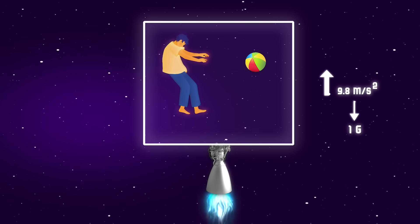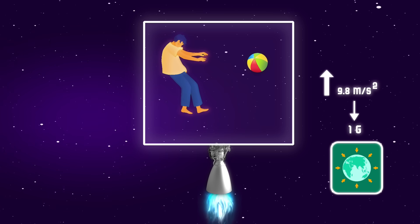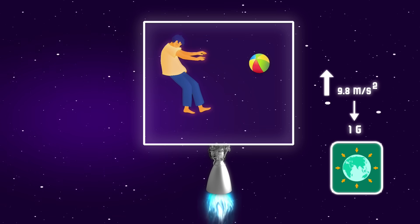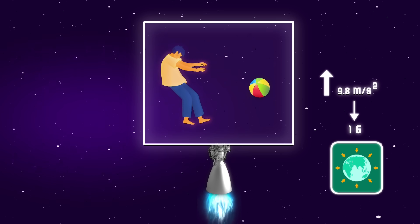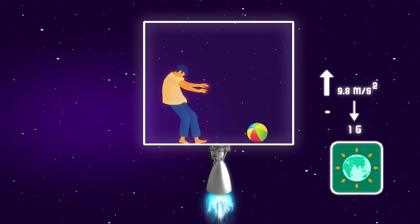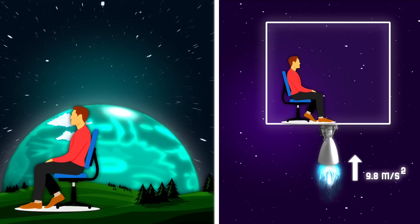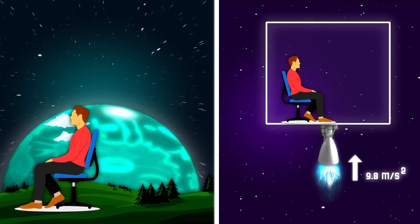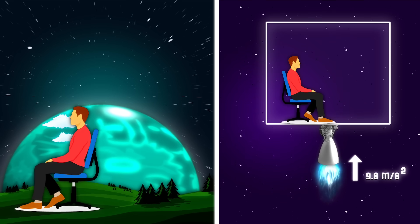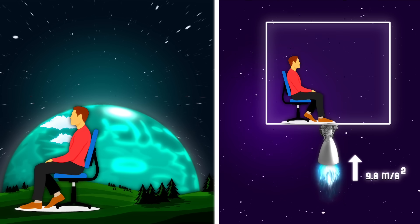9.8 is 1g, the gravitational force for Earth. Now what happens when I accelerate at this speed is that the ball floating with me will fall down on the lift floor, and I will also be pushed towards the bottom of the lift. I feel the same amount of gravity on Earth as I feel inside the lift that is accelerating at a speed of 9.8 meters per second square in space.